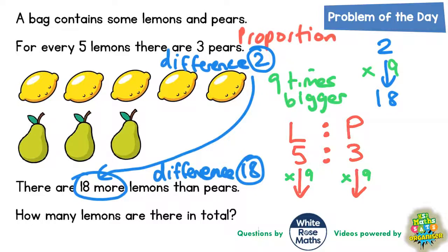Five multiplied by nine is 45 lemons, and three multiplied by nine is 27 pears. So we've got 45 lemons and 27 pears. That actually answers our question. It says how many lemons are there in total? Well lemons, it says here 45, so that's our answer: 45 lemons.